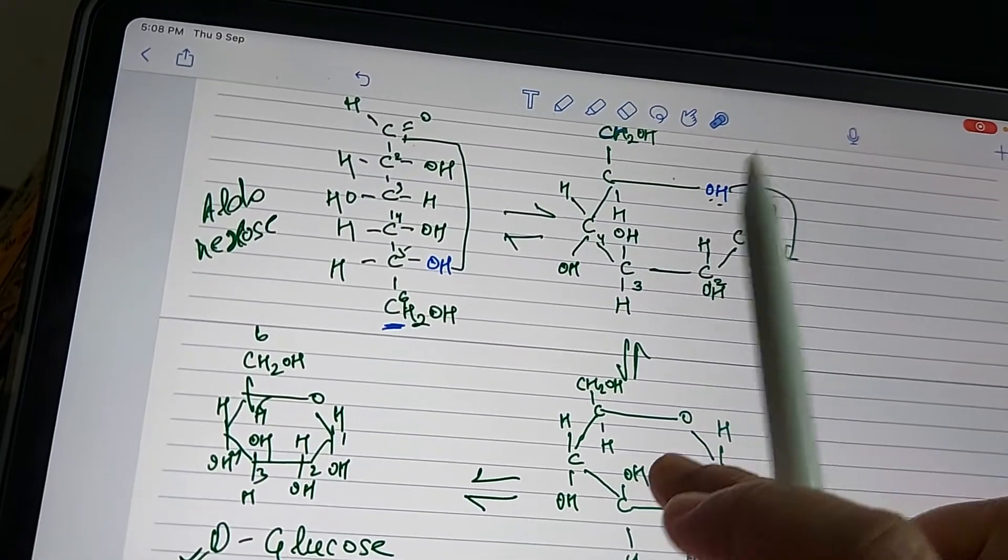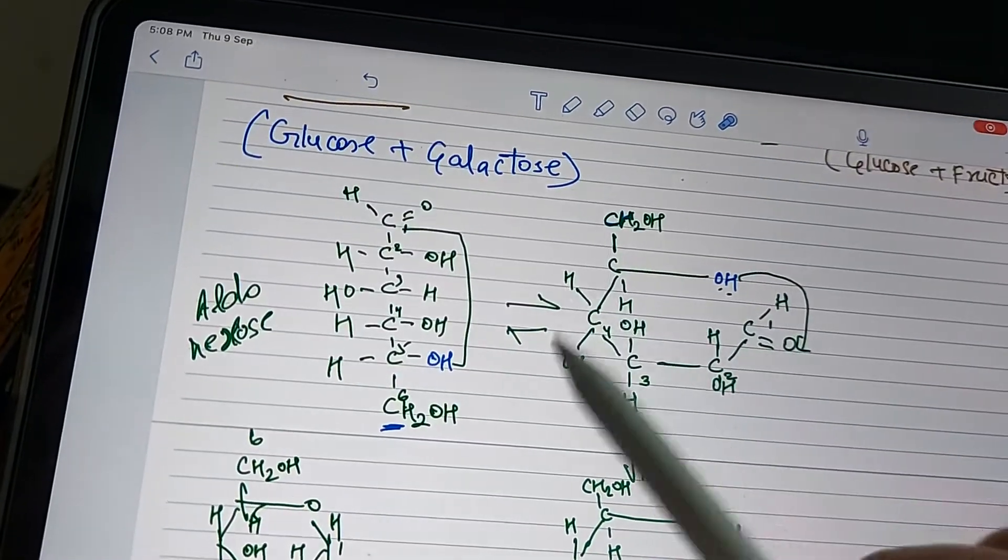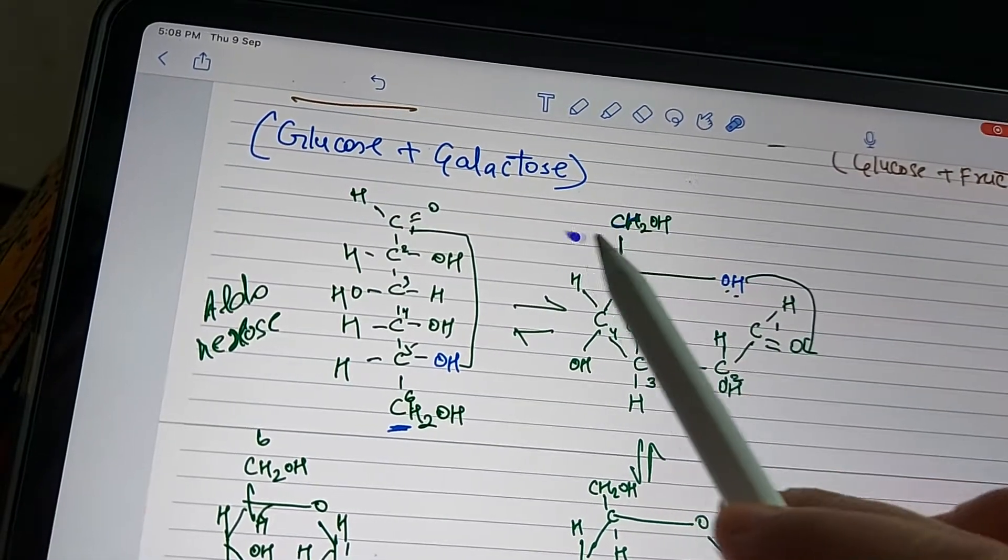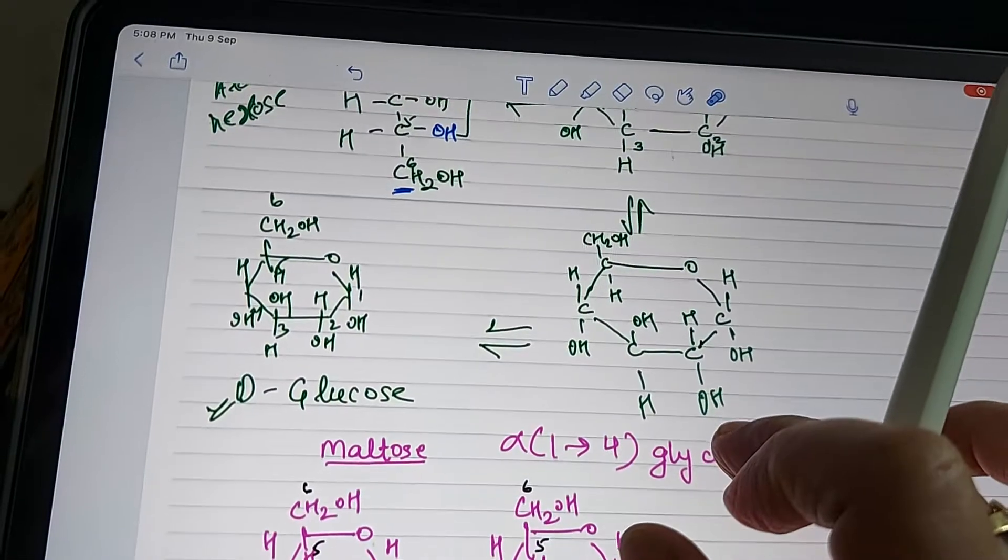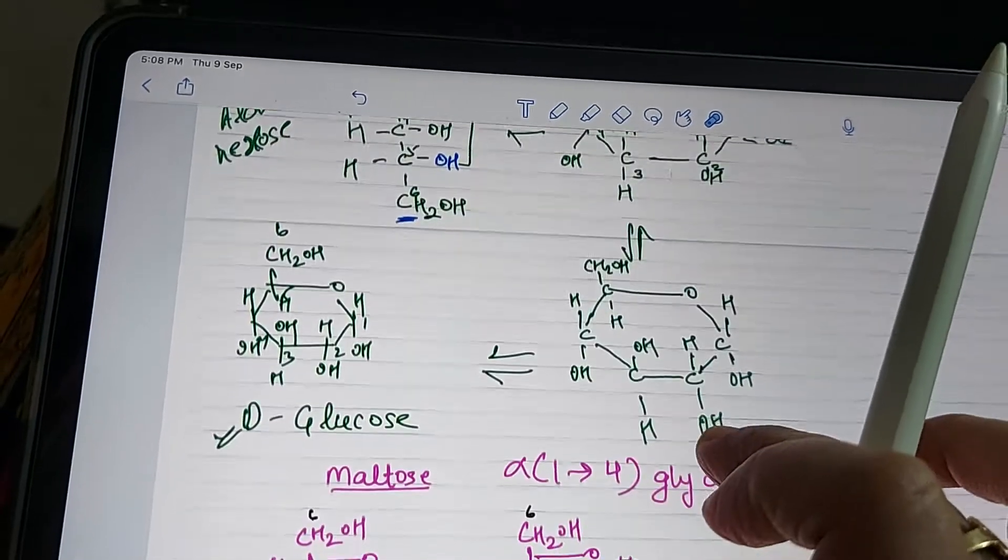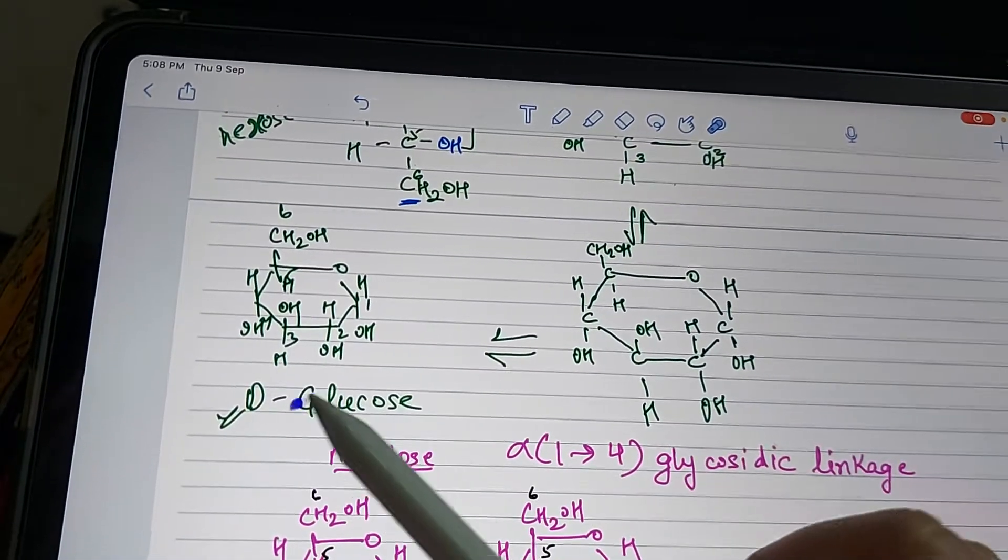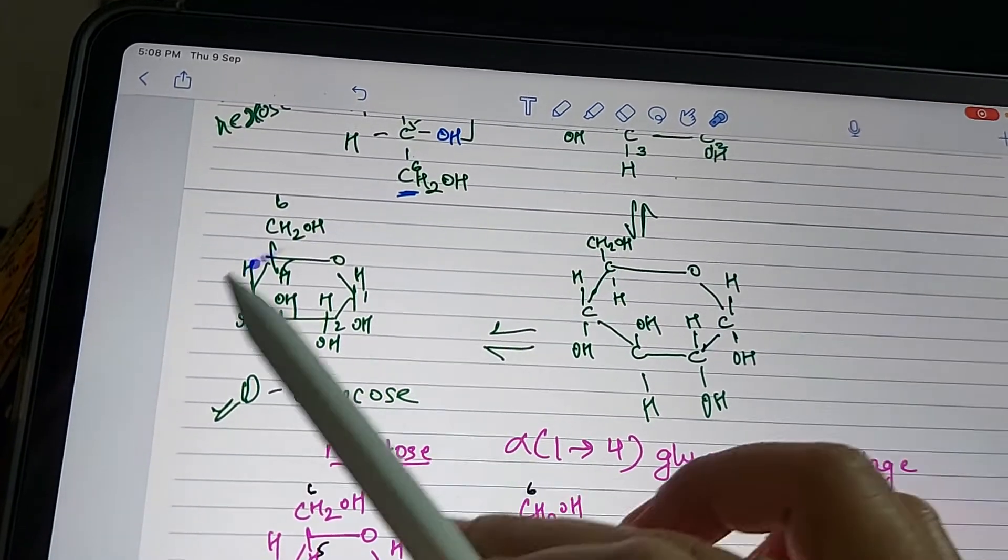Now this is the fifth carbon, and the sixth carbon is outside. This makes the pyran structure of D-glucose. This is the pyran ring.